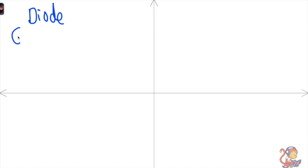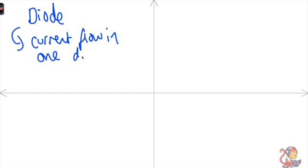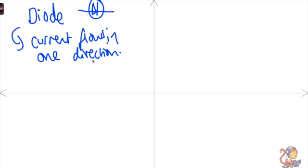The final component we need to look at is the diode. A diode is something in a circuit that only lets current flow in one direction. I remember that by noting that the symbol for a diode looks a little bit like an arrow, and that helps you remember that current only flows in one direction.